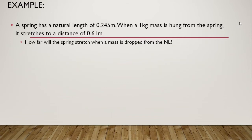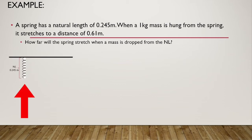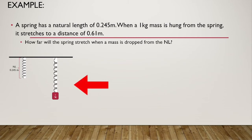Let's take a look at an example. A spring has a natural length of 0.245 meters. When a one kilogram mass is hung from the spring, it stretches to a total distance of 0.61 meters. We want to find how far the spring will stretch when a mass is dropped from the natural length. We have our spring hanging at natural length, and once we add the one kilogram mass, it stretches to 0.61 meters.